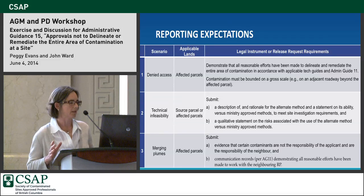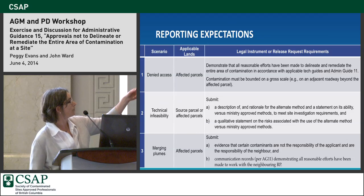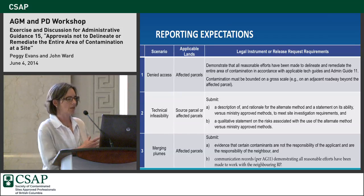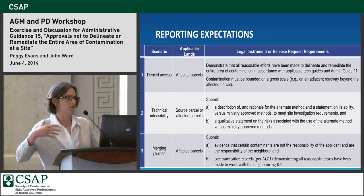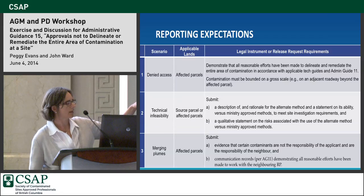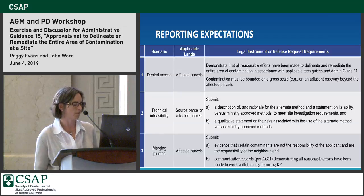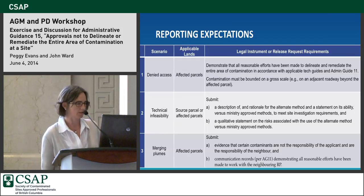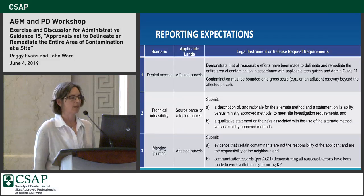The nuts and bolts are in a table at the end of AG-15. For denied access, the table shows applicable lands — affected parcels, though that could be right or wrong depending on the scenario — and details on the kind of reporting the director would look for in order to issue one of these pre-approvals. All these decisions are publicly available in the approvals workbook, so you can see the director's thinking and what requirements were needed. The workbook needs to be updated, as there are many approvals issued since it was last posted on the web.